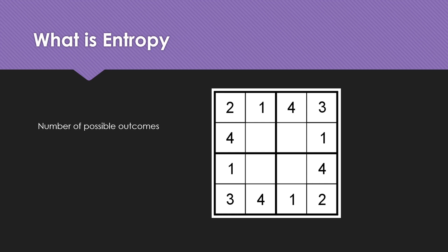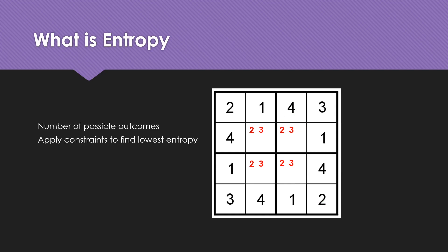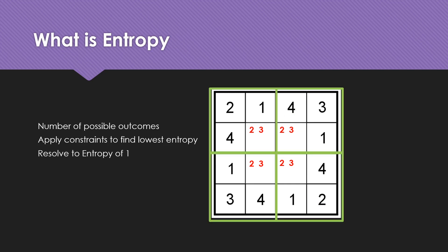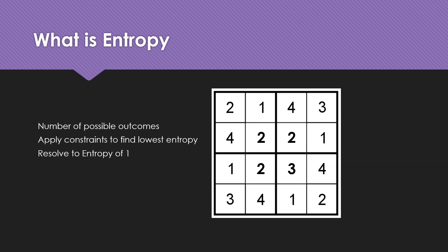Let us now define entropy for a two-dimensional space. Entropy in a two-dimensional space is the number of possible outcomes that can occur at any given cell. In this case, four empty cells have number choices of 2 and 3, so entropy is 2 at each of these cell locations. By applying the constraint to find the lowest entropy, we are able to resolve entropy at each cell to a value of 1, which means we can solve the problem.